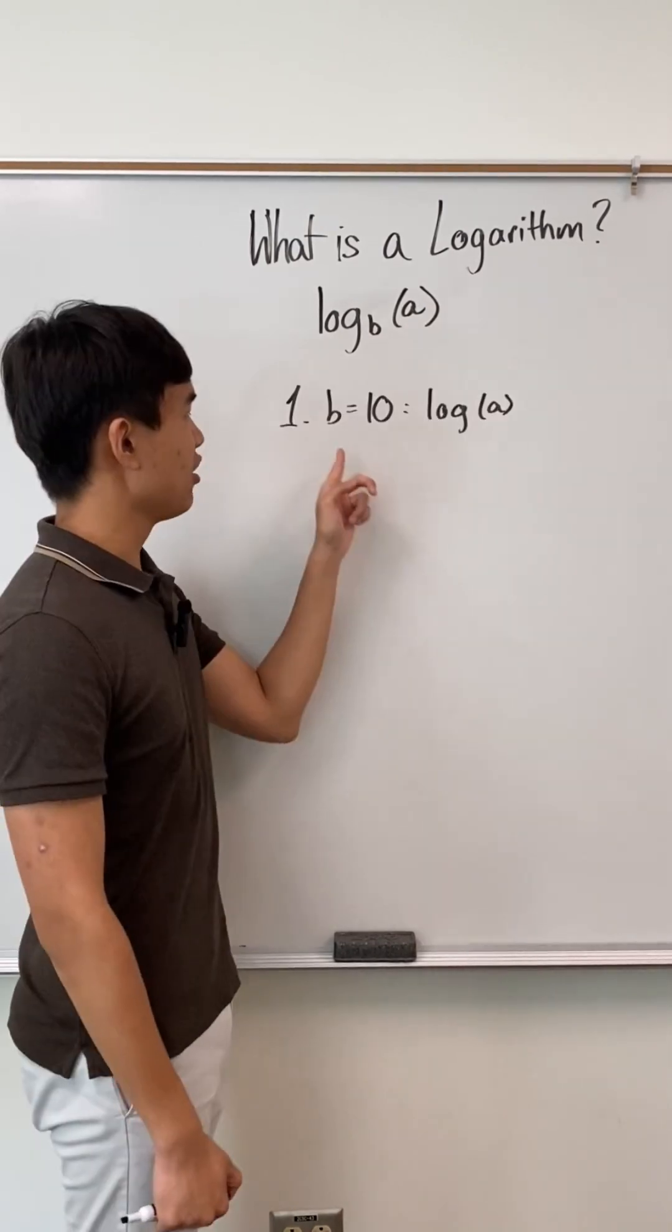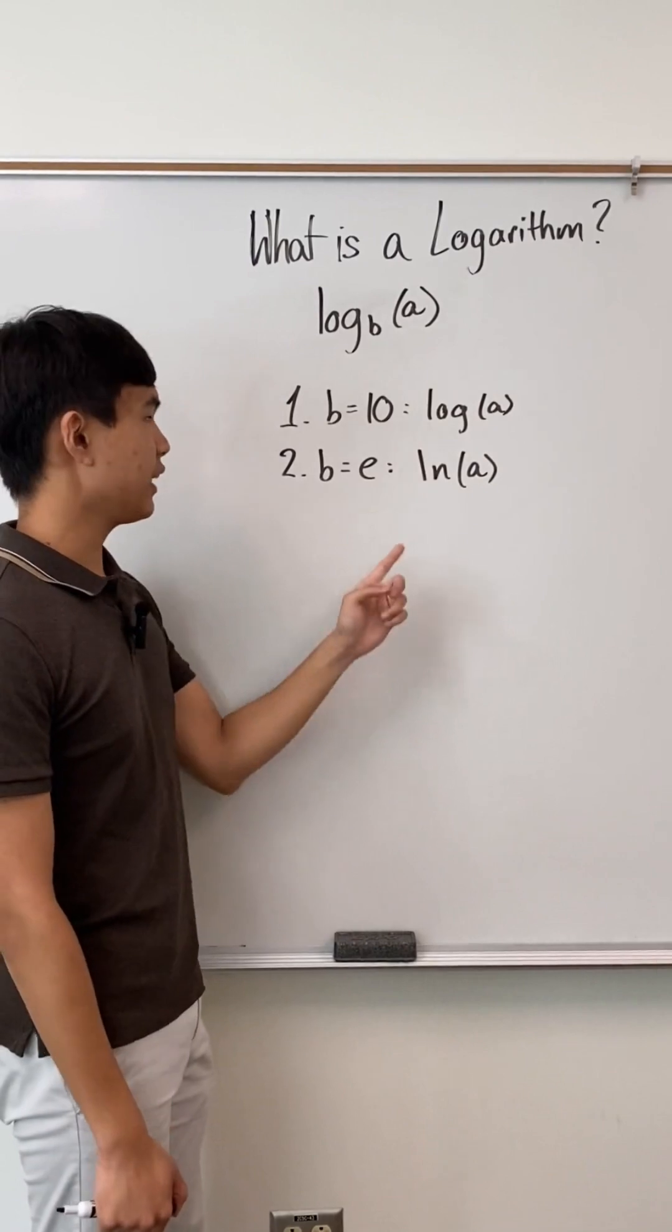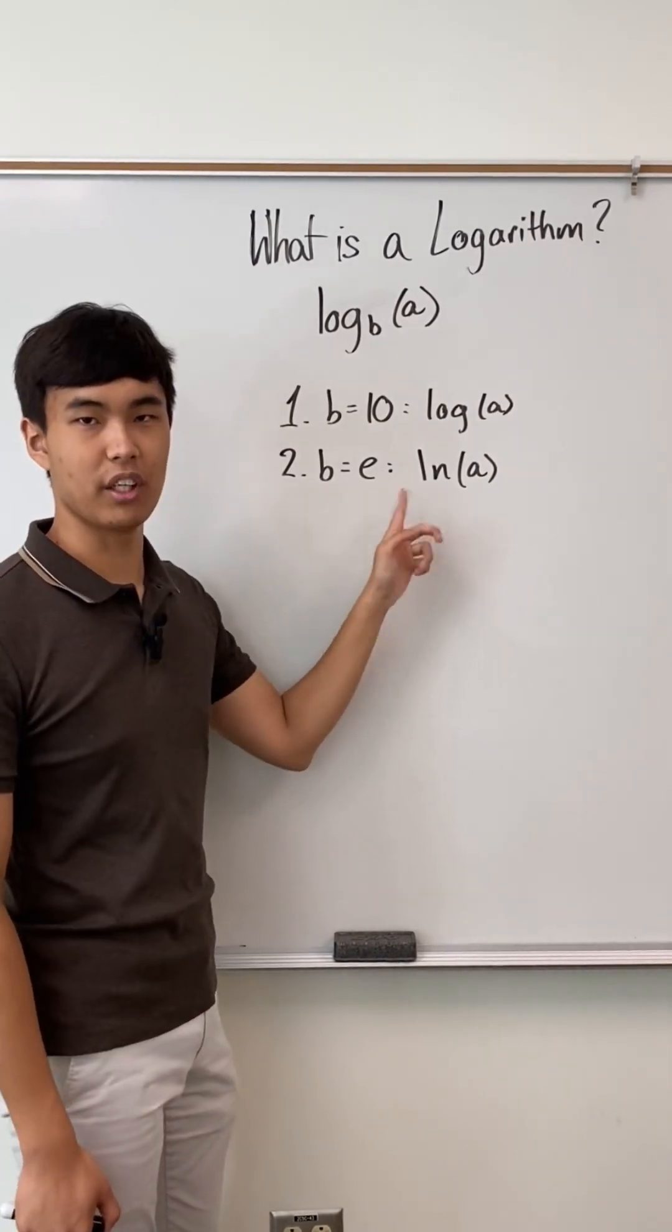However, there are two notation exceptions. If b equals 10, we don't write the base here. And if b equals e, then this is the natural log of a.